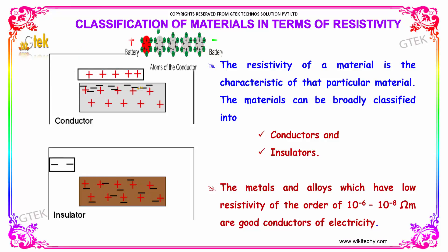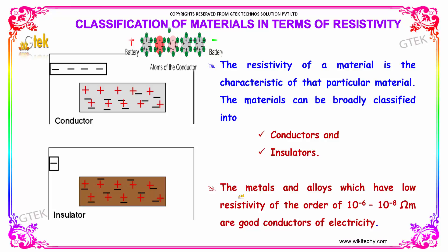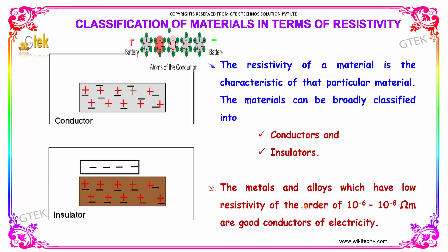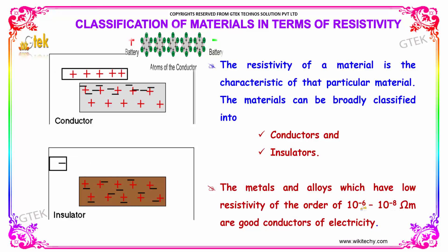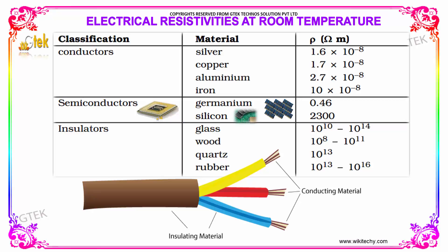Automatically, the electrons are moving in a conductor, and in an insulator they are not moving. Metals and alloys which have low resistivity of the order of 10 to the power minus 6 to 10 to the power minus 8 ohm meter are considered good conductors of electricity. Some typical examples of conductors are silver and copper, with their respective resistivity values. Semiconductors include germanium and silicon as examples. And insulators have their own resistivity values shown as well.